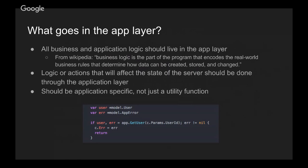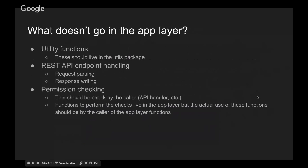Basically, any logic or actions that will affect the state of the server should be done through the application layer. We're not perfect on this in the current incarnation — there are still some things in the API layer that directly talk to the stores and don't go through the application layer. But for the most part, we're pretty good about it. Another point: functions in the app layer should be application-specific, not just utility functions. If it doesn't pertain directly to application or business logic, it belongs more in the utility package.